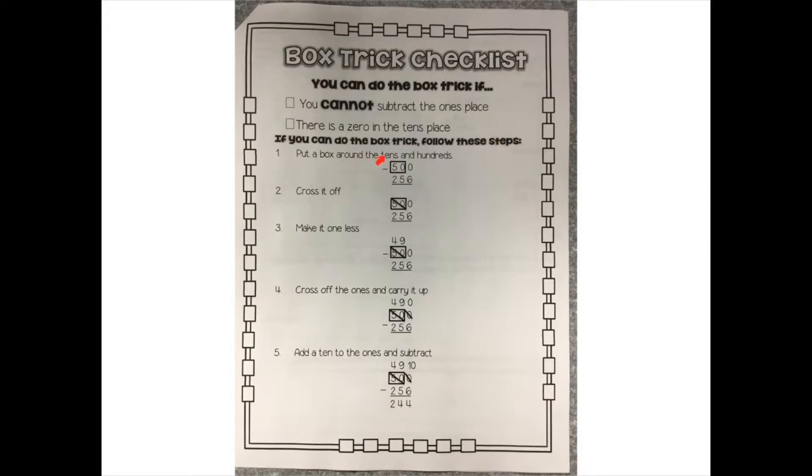Step one, put a box around the tens and hundreds. So my box starts with the first zero where we can't regroup, and I keep drawing a box until I get to the next number that's not zero. So in this case, it's right next door. It's a 5. So I draw a box around 5, 0, or 50.